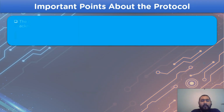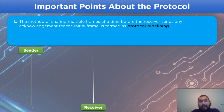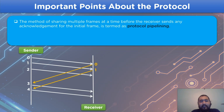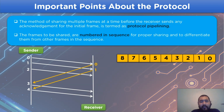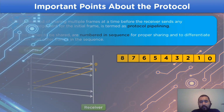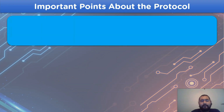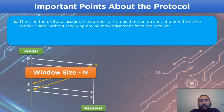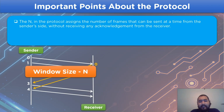Now let's look into some important points regarding the protocol. The method applied to share multiple frames from the sender side to the receiver side is known as protocol pipelining, where each frame is assigned a sequence number for proper transmission of data in the network channel. The N in the protocol refers to the window size — that is, the maximum limit of frames that can be transmitted from the sender to the receiver side before receiving the acknowledgement for the previous frame.